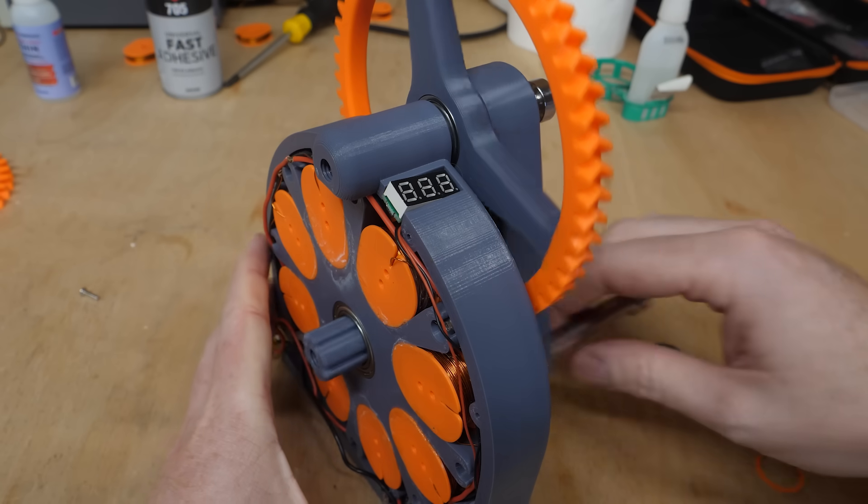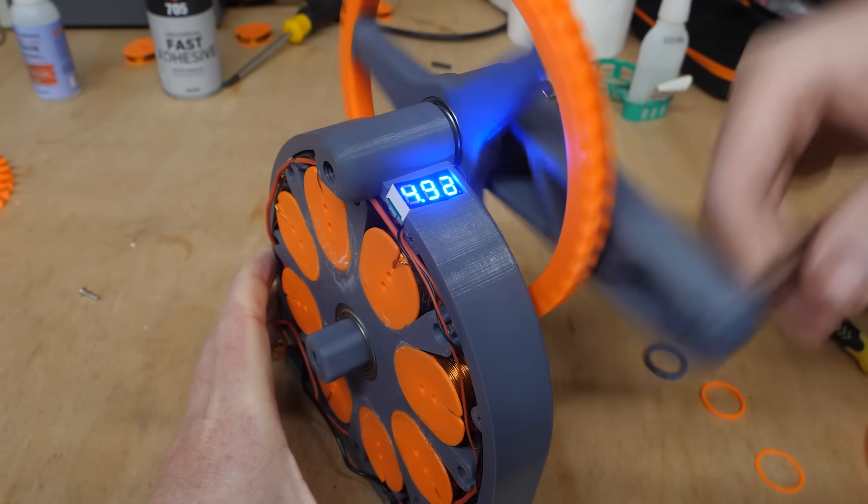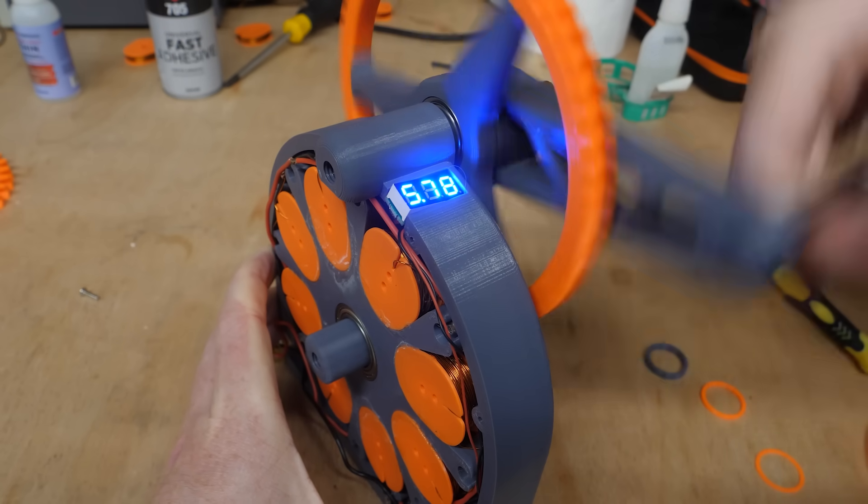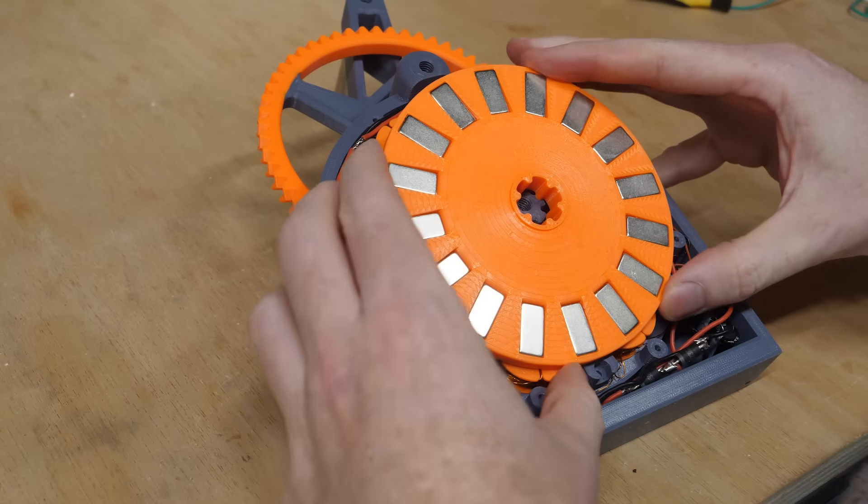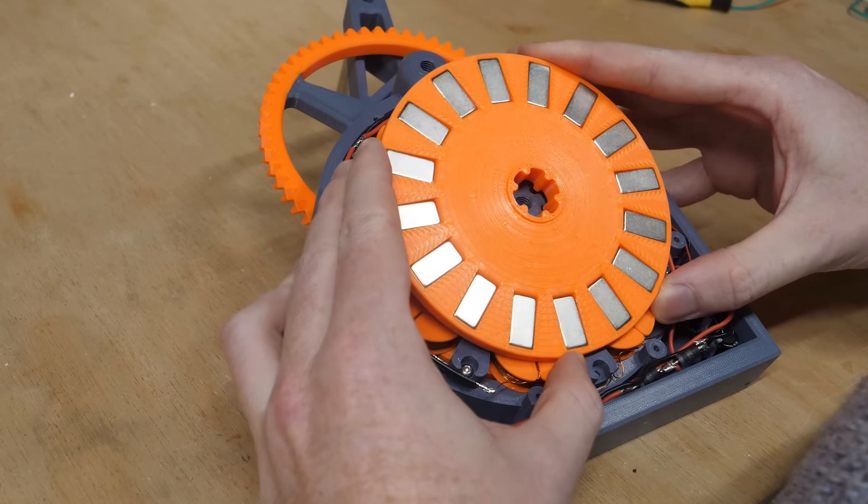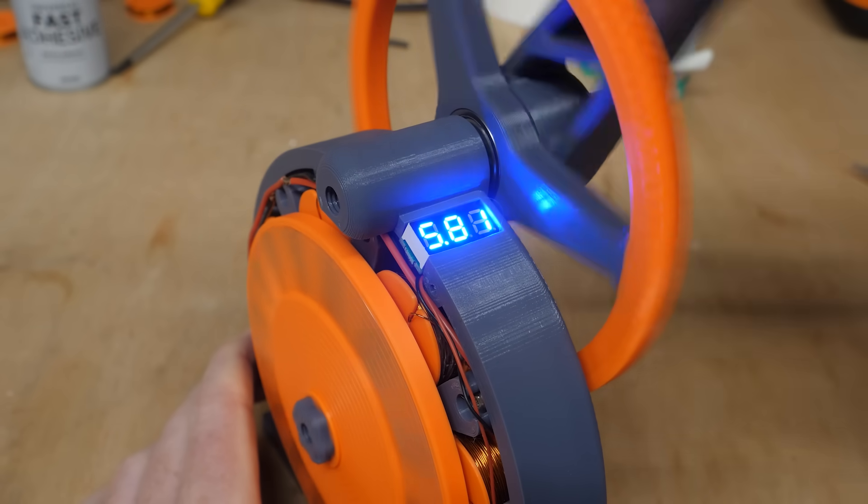So with a small voltmeter connected to the output of the rectifier, we can see the generated electricity when the handle is spun. Though this is only with one rotor spinning, and by attaching the second rotor we can greatly increase the magnetic field within the coils, essentially doubling the output voltage.